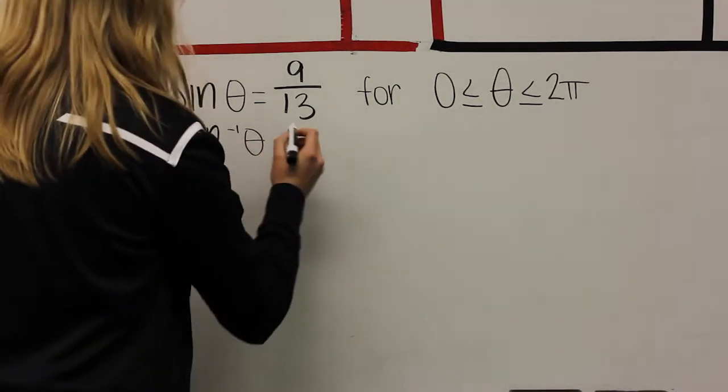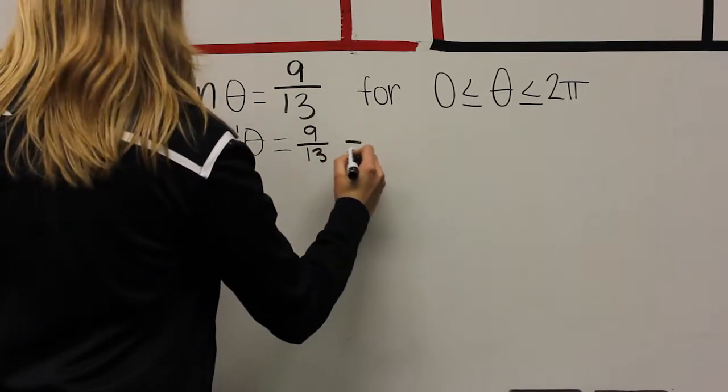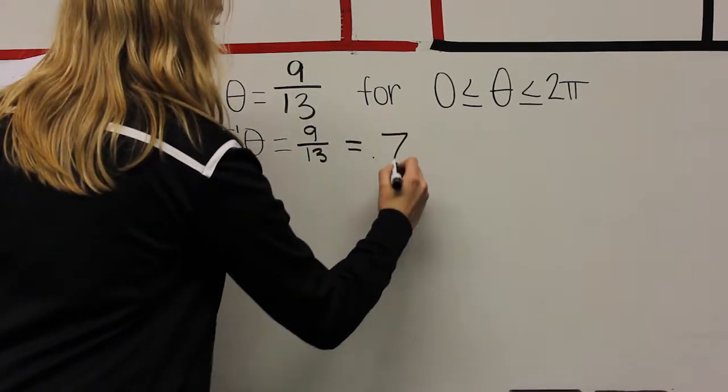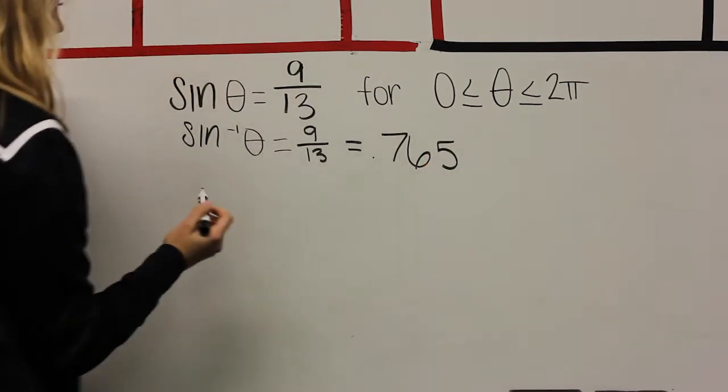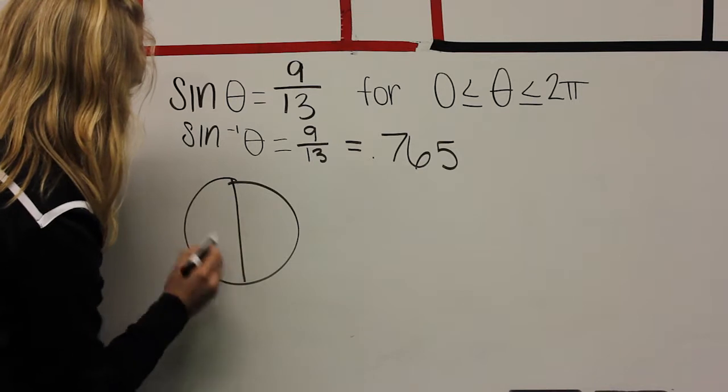Problem B, sine of 9 over 13. Find the inverse sine of 9 over 13 and punch it into your calculator. You're going to get your first answer in quadrant 1 and then subtract that answer from pi to find your answer in quadrant 2.